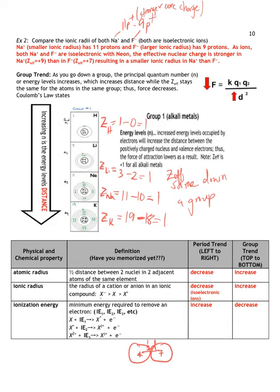Atomic radius is defined as half the distance between the nuclei of two adjacent atoms of the same element. If you place two atoms next to each other, measure the distance between their nuclei, then halve it — that is the atomic radius. Ionic radius is the radius of an ion. Comparing: anion > neutral atom > cation in terms of radius size.